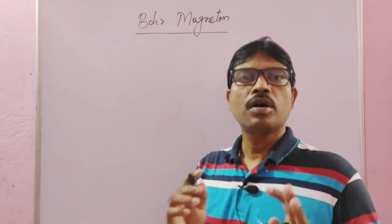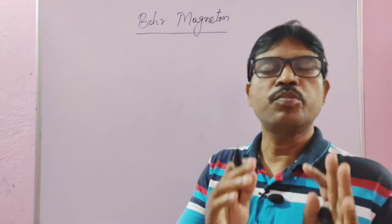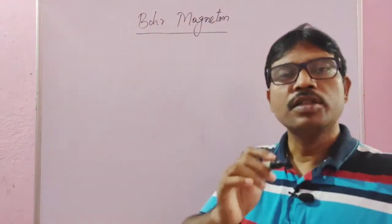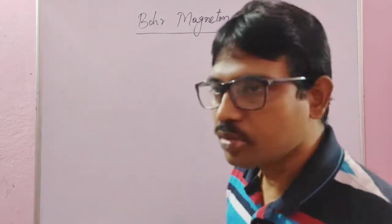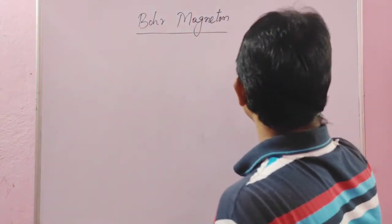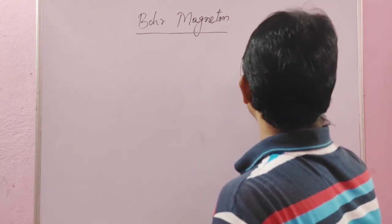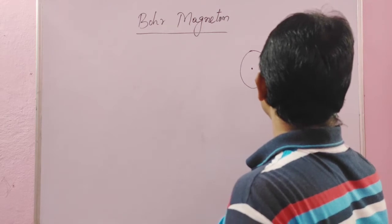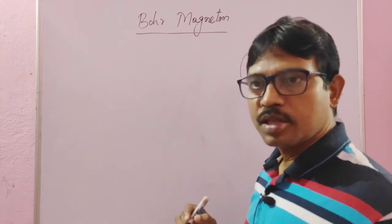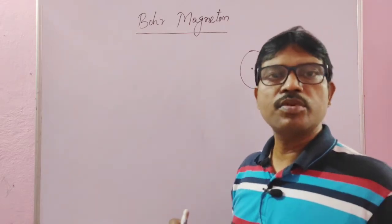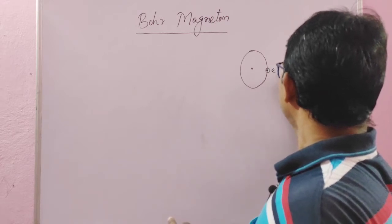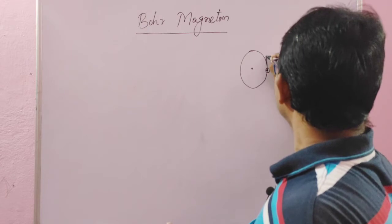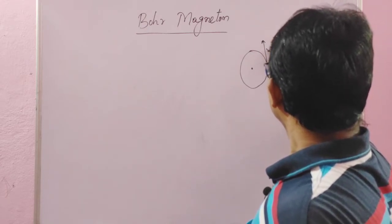Bohr magneton is the magnetic dipole moment of an electron associated with the innermost orbit of a hydrogen atom. Suppose this is an atom, this is the nucleus, and the electron is here. As we know, there are three fundamental particles present in the atom: electron, proton, and neutron. Proton and neutron are present in the nucleus, and the electron revolves around it. The mass of the electron is M and the velocity is V.